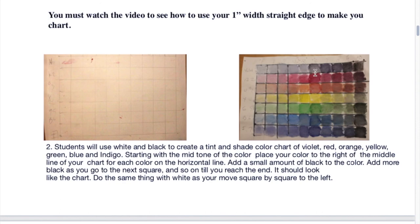You are going to start over here at the top with violet. You are going to add a touch of black to each square as you go to the right. It is going to get darker, more black, a darker shade. You are going to add white as you go to the left. You are going to get a lighter shade. You are going to do that with each color.